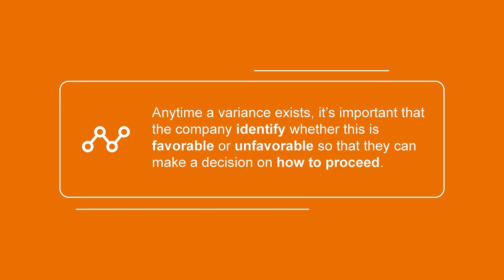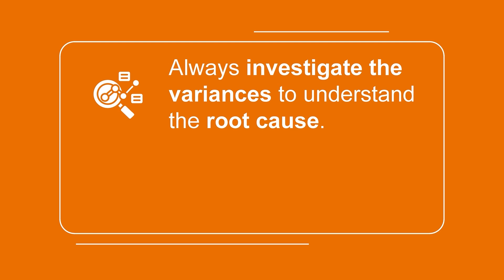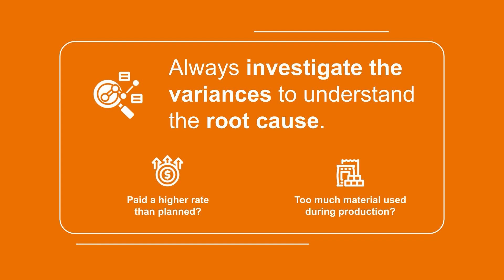Determining these variances between the budgeted values and the actual results is only the first step. The next step, which can be even more important, is to spend time investigating the variances. In the example we just discussed, where the company had a $500 unfavorable direct materials variance, they'll want to get an understanding of the root cause behind this. Could this have happened because the purchasing department bought the materials from the wrong supplier and paid a higher rate than planned? Or was it because the operations team used too much volume of material during the production process? These are the important types of questions that will need answering in order to improve things going forward.